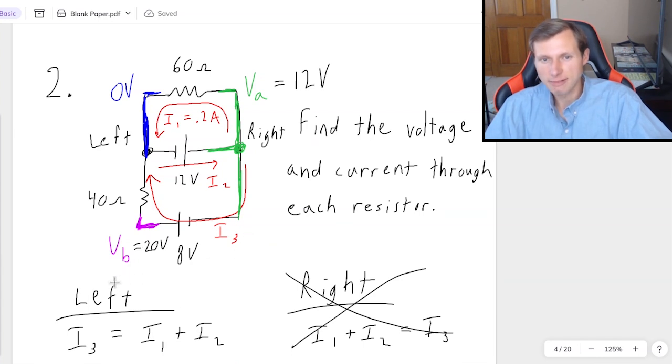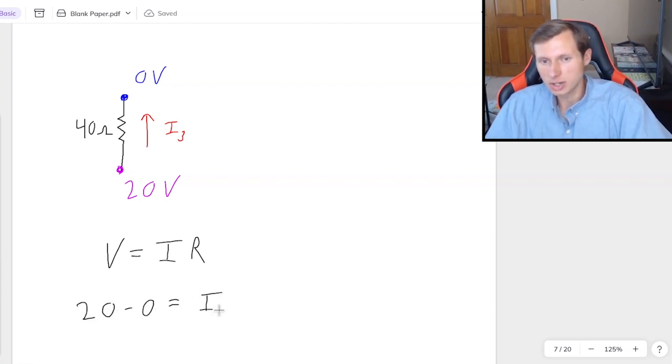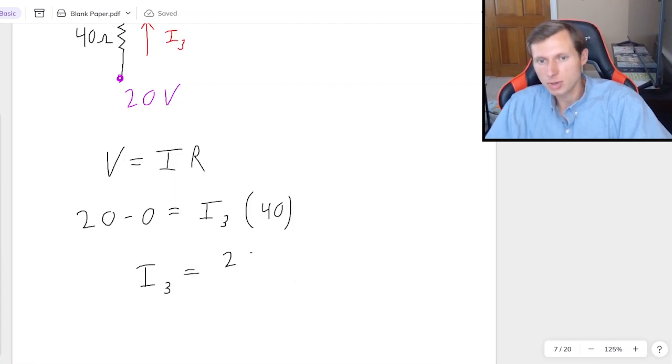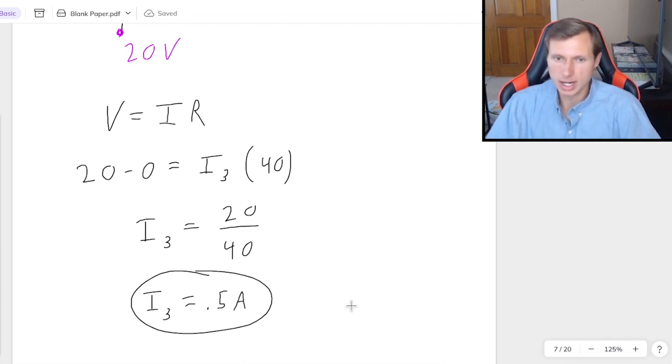And so then the only thing to deal with left is this last resistor, the 40 ohm. Again, I am writing it on its own, it really helps me visualize it. And the equation is going to be Ohm's law of V equals I times R, where V, remember it's from bottom to top here because I'm following the current, it's going to be 20 minus 0 equals current, which I don't know, I3, times resistance, 40. So if I solve for I3, it's going to be 20 divided by 40, which is positive 0.5 amps, which simply means I chose the correct direction for my current I3.